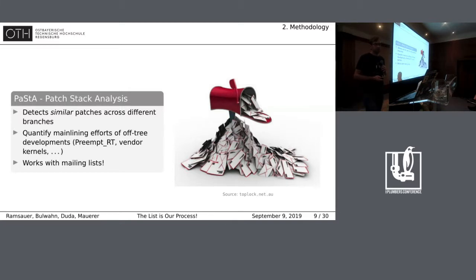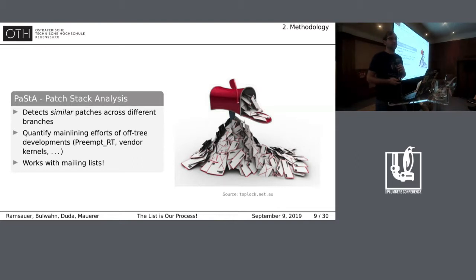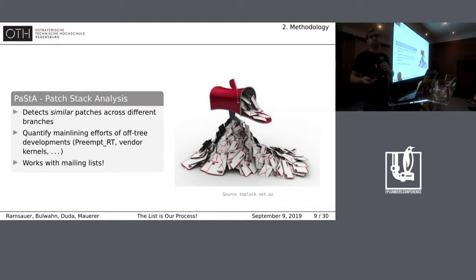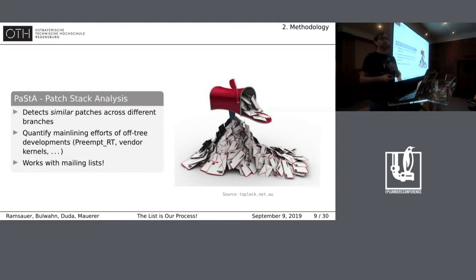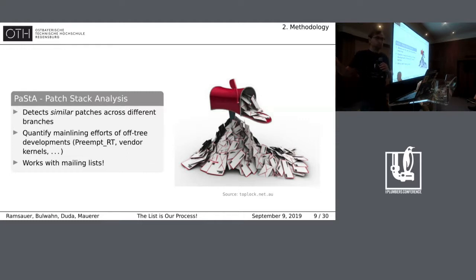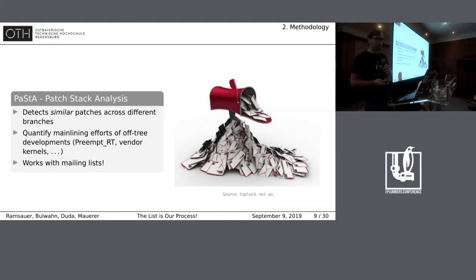Our tool is called PASTA — the patch stack analysis. Initially, it was designed to detect similar patches applied to different branches in a repository. We used that tool to quantify mainlining efforts of large out-of-tree developments such as the preempt RT patch stack — to know how many patches of that stack are being mainlined over time. We added support for mailing lists because from a structural point of view, a mail on a mailing list is nothing else than a commit in a repository.